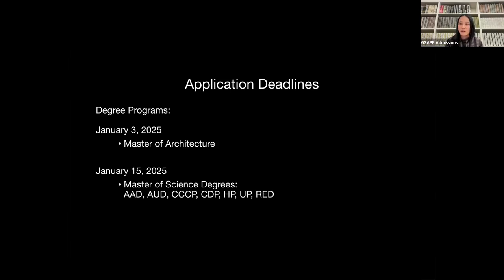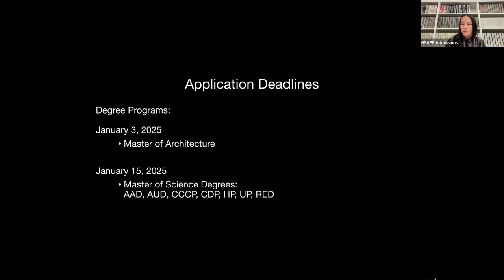If you're applying for a dual degree program, you don't have to adhere to one deadline. For example, if your dual degree interest is Master of Architecture and the CCCP program, you can submit your CCCP application by January 15th and your Master of Architecture application by January 3rd. You don't need to submit them both by January 3rd. Each one has its separate deadline, and regardless, they will still be reviewed by separate faculty.